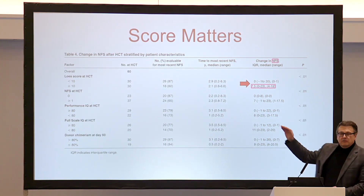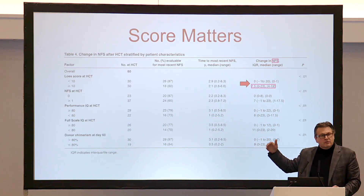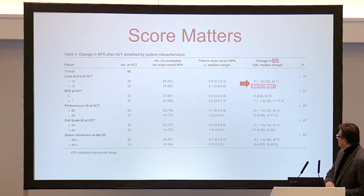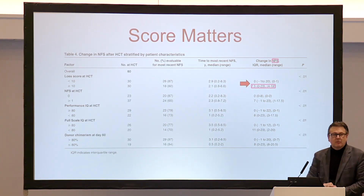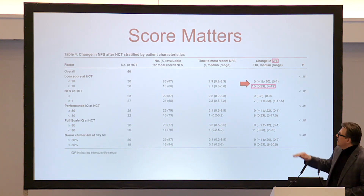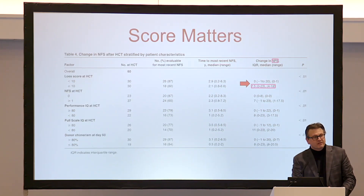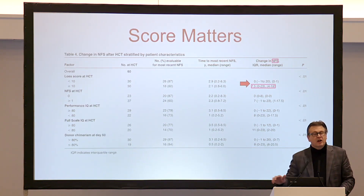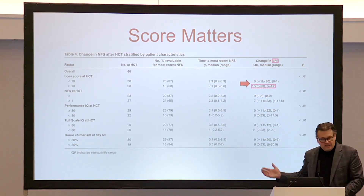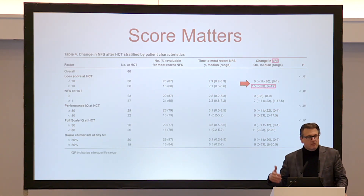Separating patients again by the high-risk category of a score of 10: if you came in with a Loes score less than 10, your median change in NFS is 0 points. Those children did exceedingly well — they didn't gain any symptoms at a median of about 3 years after transplant. Children who came in at 10 or greater gained up to 7.5 points in NFS — that's probably seizures, cortical involvement, field cuts, maybe blindness, aphasia, apraxia, movement disorder, spasticity. This gives us evidence that earlier is way, way better when talking about outcomes after transplant.